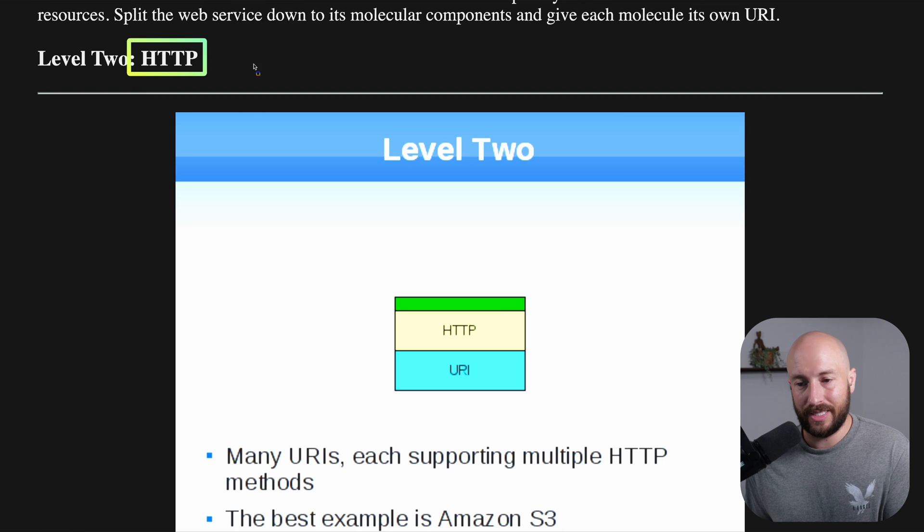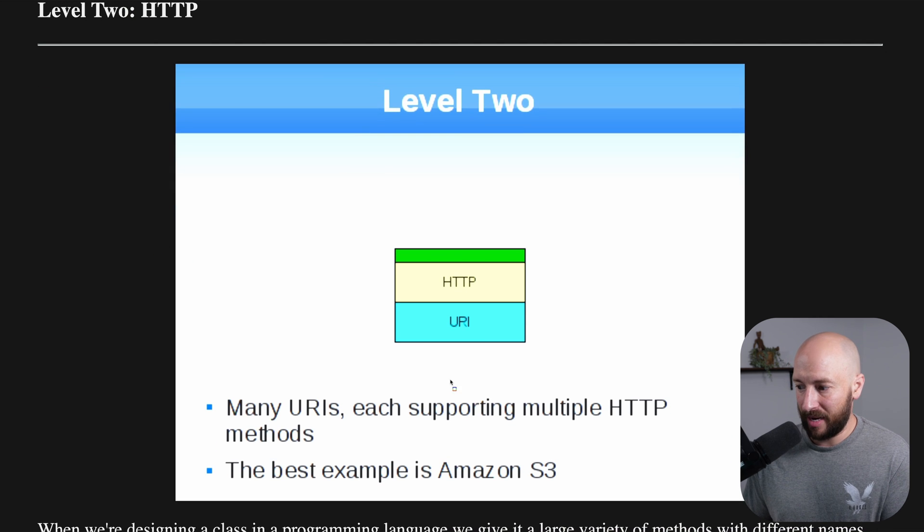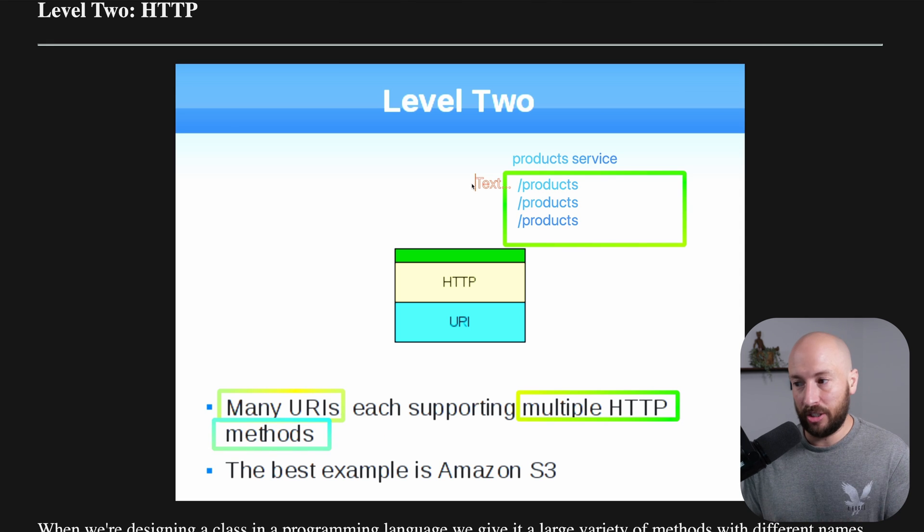Next, we have Level 2, which is HTTP. As you would expect, we're not only supporting many URIs, but we're also supporting multiple HTTP methods. Now we won't have only HTTP POST, but we'll have HTTP GET for retrieving a product, POST for creating a product, and PUT for replacing or creating a new product.